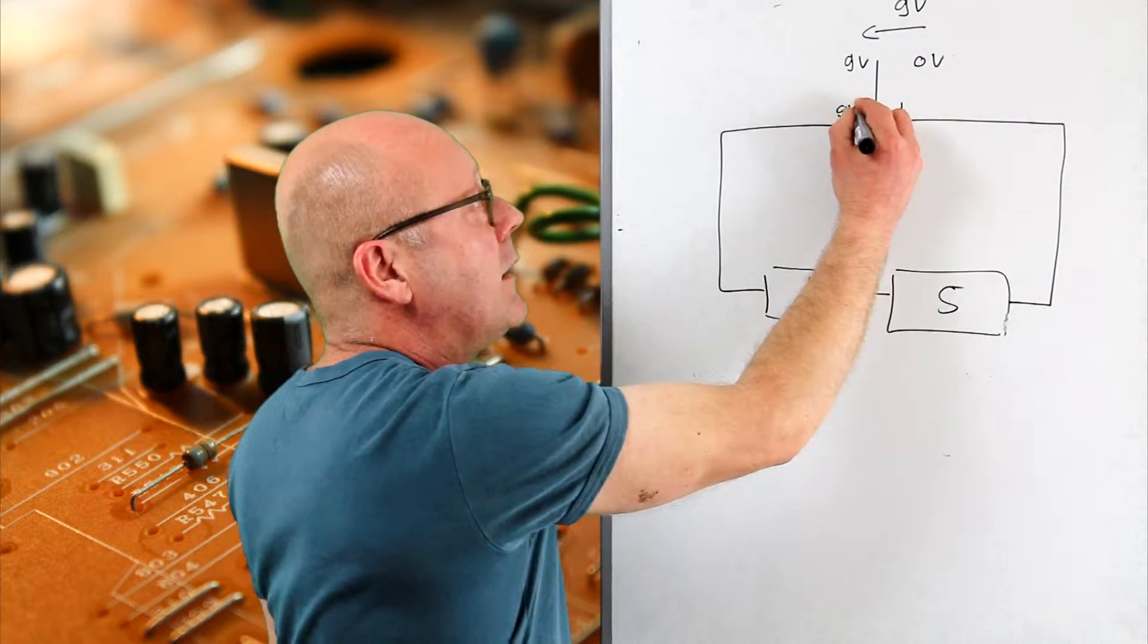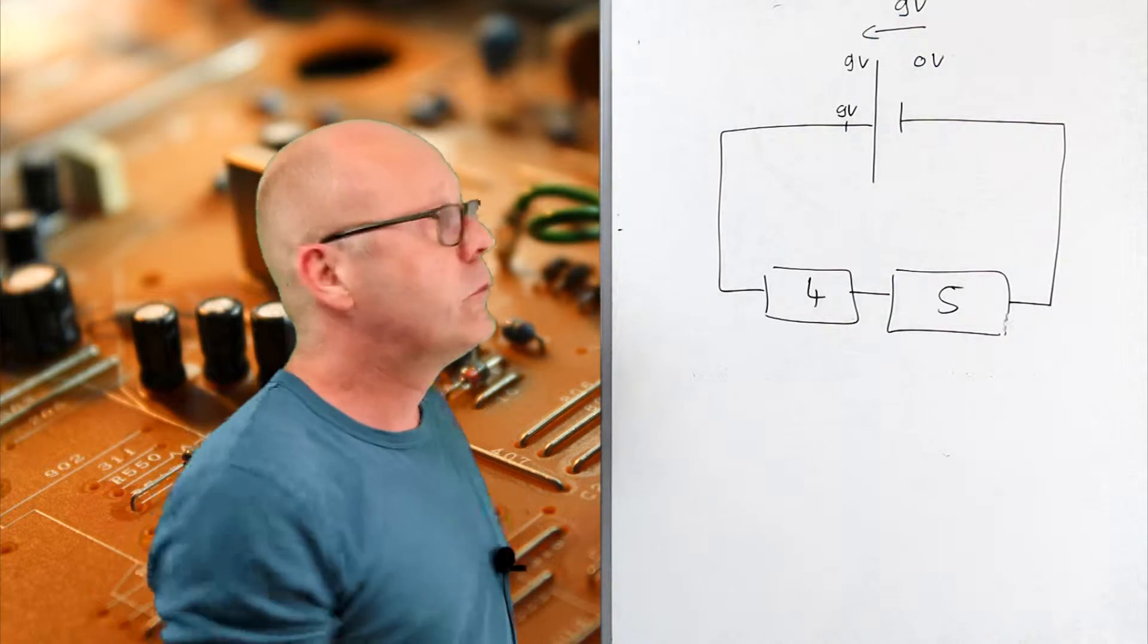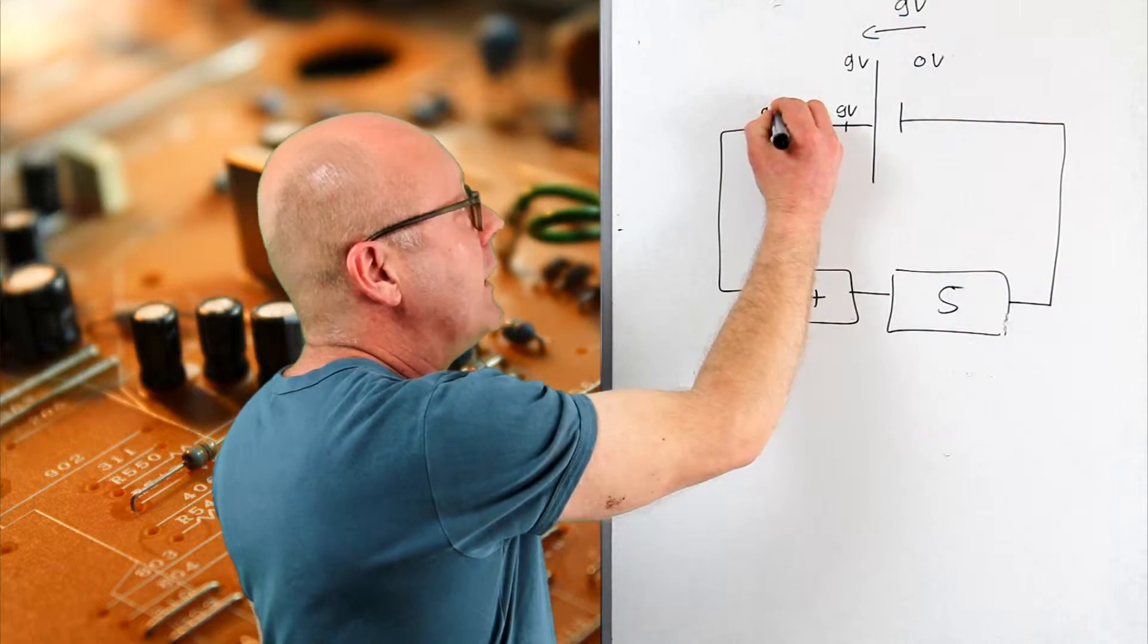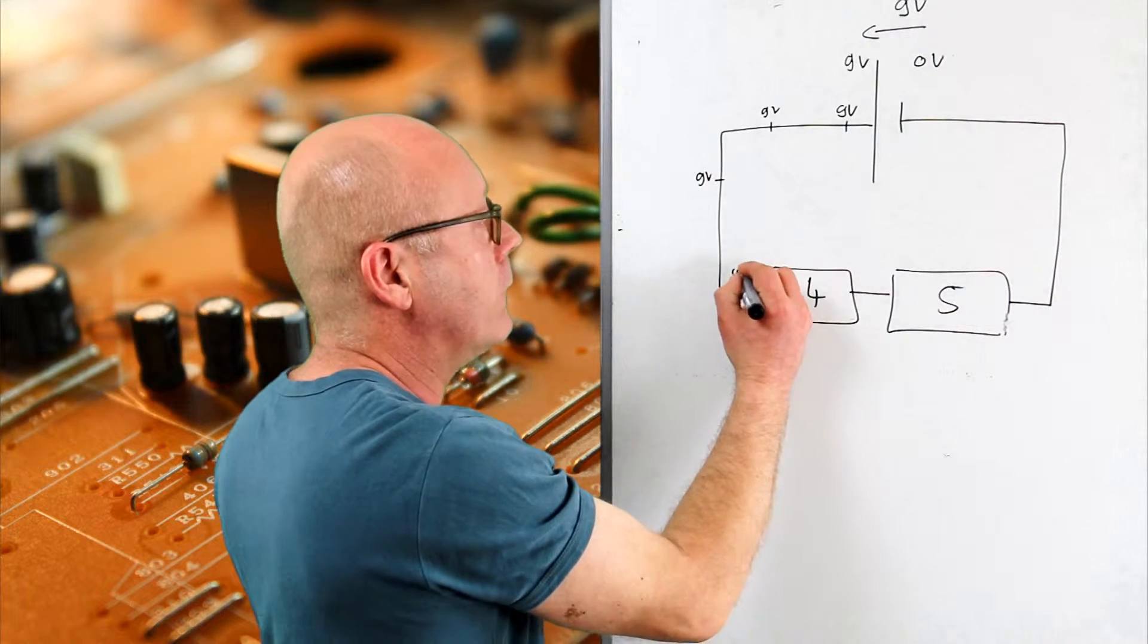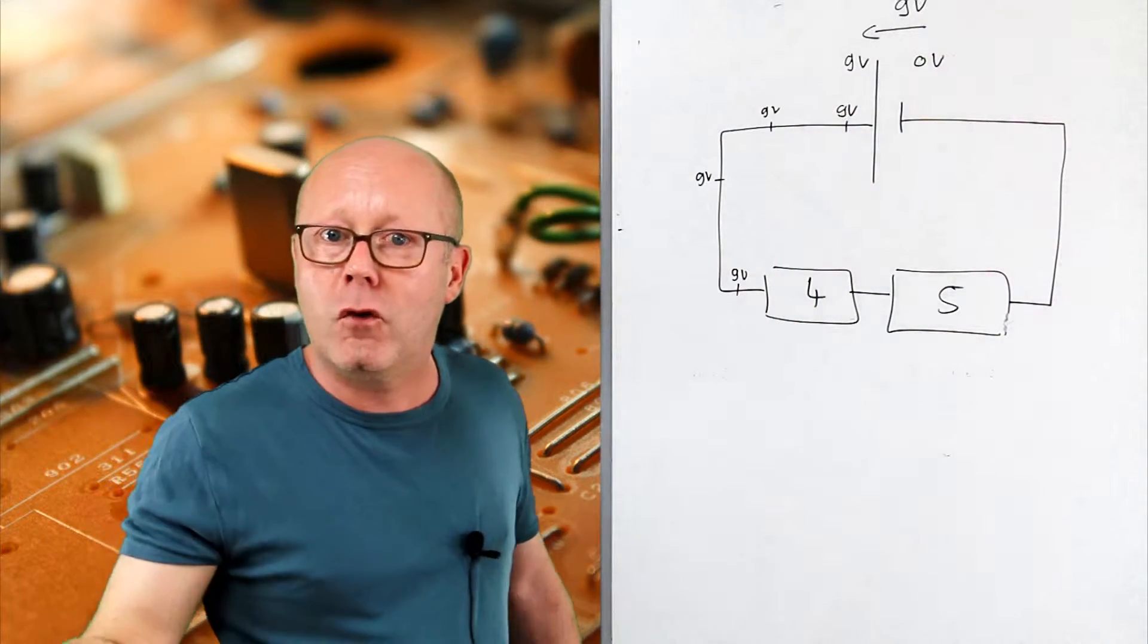So you have nine volts here, meaning that each coulomb of charge will have nine joules. Nine volts here, nine volts here, nine volts here. In the cable, there's no loss of energy, so you always have nine joules for each coulomb.